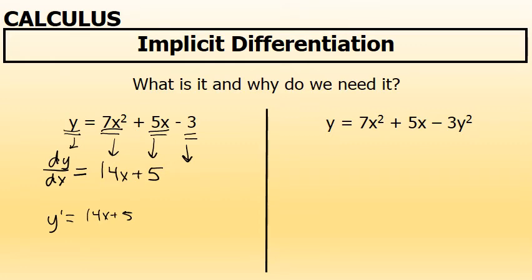And the reason is because if you have y equals and you take the derivative, we're going to find that the derivative of y can be stated as y prime, the derivative of y with respect to x, the derivative of 7x squared is again 14x, and the derivative of 5x is 5.